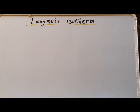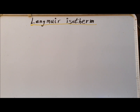Hello. In this video, we are going to derive an expression for the Langmuir isotherm. The Langmuir isotherm is used to describe the adsorption of gas molecules onto a surface, which is often a metal.